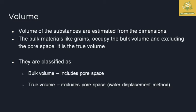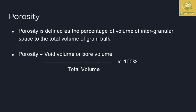Porosity is defined as the percentage of the volume of intergranular space to the volume of the grain bulk. Porosity is calculated as void volume or pore volume divided by total volume, multiplied by 100 percent. It is also determined by the water displacement method for the calculation of void or pore volume.